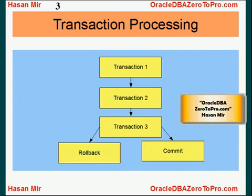Transaction processing goes like this: a user enters a transaction, then may enter a few more transactions. Finally, when done entering all transactions, they either commit their work or roll back. An example of a transaction would include an update statement, insert statement, or delete statement. These are considered transactions because you are either modifying or removing data to represent some business event happening in the real world. The concept is that either all related transactions will be saved together or none of them will be saved.